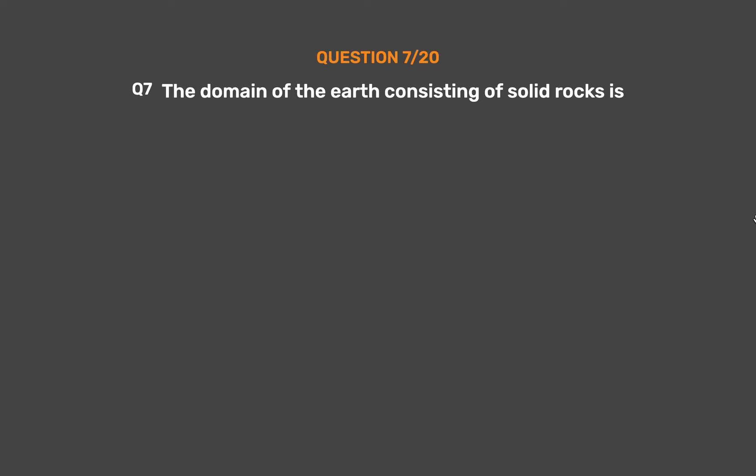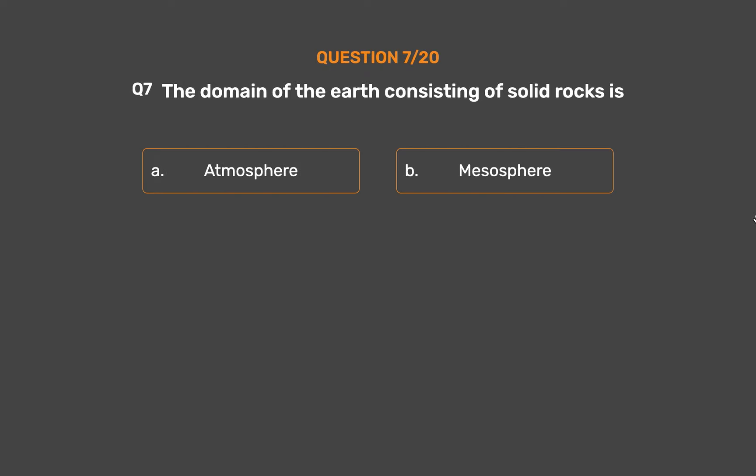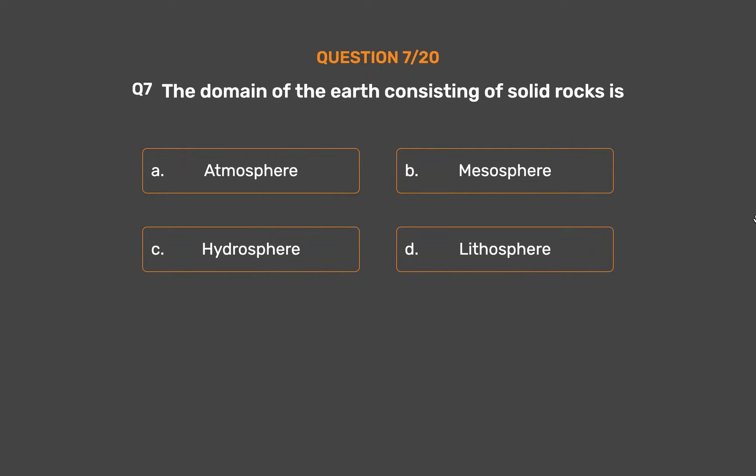Question Number 7. The domain of the Earth consisting of solid rocks is — Option A: Atmosphere. Option B: Mesosphere. Option C: Hydrosphere. Option D: Lithosphere.